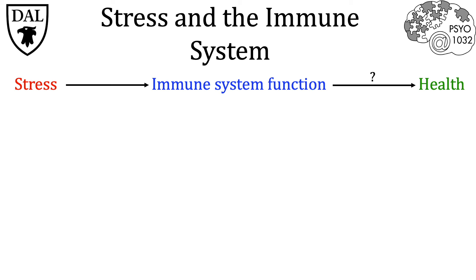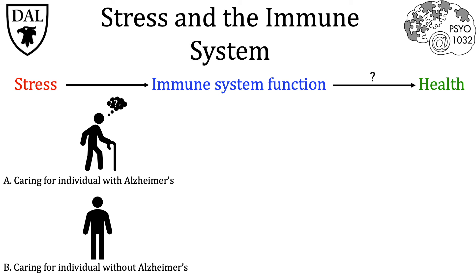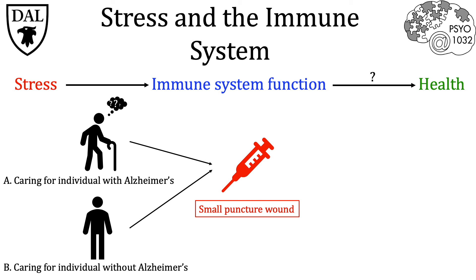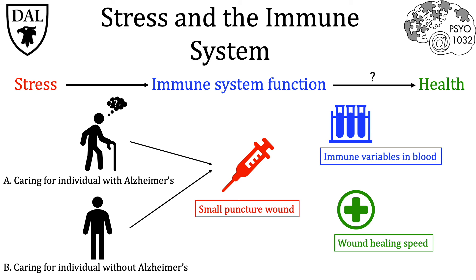This last question is asked and answered in the following two experiments. In the first experiment, conducted in 1995, two different groups were assembled. Group A consisted of individuals who were currently the primary care providers for individuals with Alzheimer's disease, and Group B was a control group — this presumed that those caring for Alzheimer's patients would have higher levels of psychological stress. Each individual within each group was given a small puncture wound and followed up by assessing two separate factors: the concentration of different immune variables in the blood, and the actual wound healing process — the amount of time it took for the small puncture wound to heal — thus measuring the direct health of the individuals.